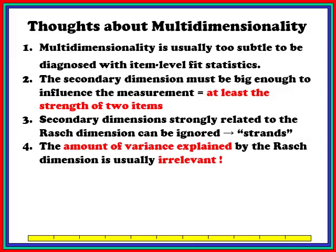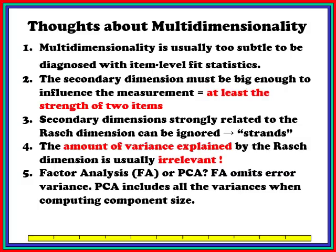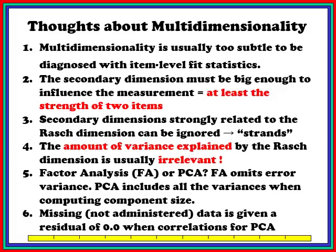Here's something fundamental: the amount of variance explained by the Rasch dimension is usually irrelevant. In the literature there are rules — some written by me years ago — talking about 40% of the variance needing to be explained by the Rasch dimension. Work since then has discovered that's really irrelevant. It's not what the Rasch dimension does, it's what the other dimensions do that's important. Why not use factor analysis instead of principal components analysis? The whole point of factor analysis is to omit error variance, but for us, error variance is central to Rasch measurement. So we need a method that includes error variance, and that's principal components analysis.